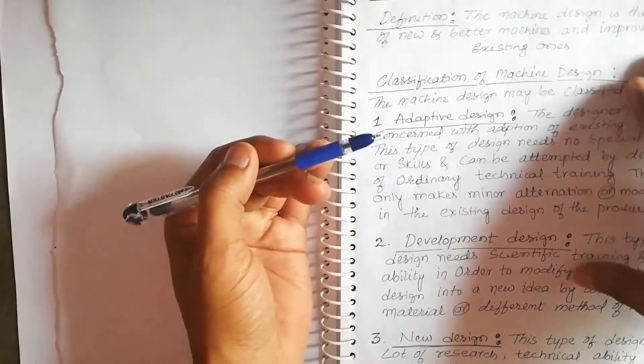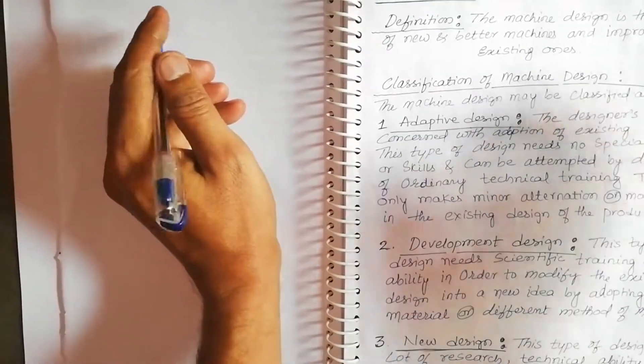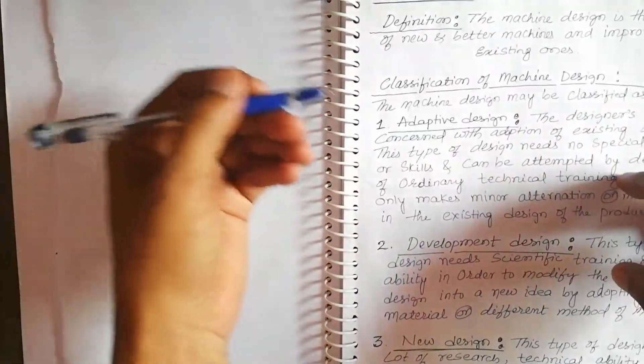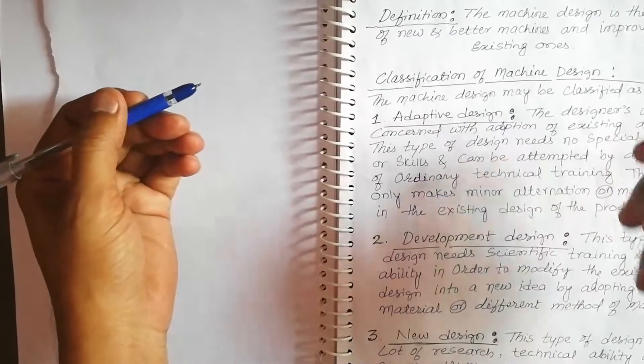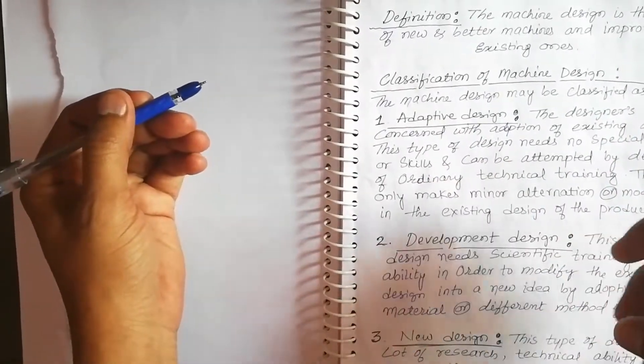Machine design can be defined as the creation of new and better machines and also improving the existing ones. This means that design is the creation of something new or improving the existing one which is already present in the market.